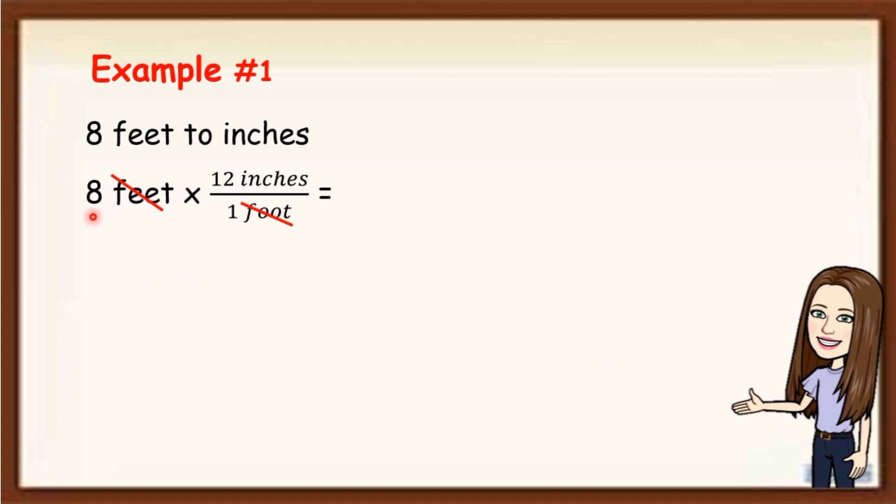8 times 12 divided by 1 is equal to 96 inches. Therefore, 8 feet is equal to 96 inches. Now, let's have example number 2.